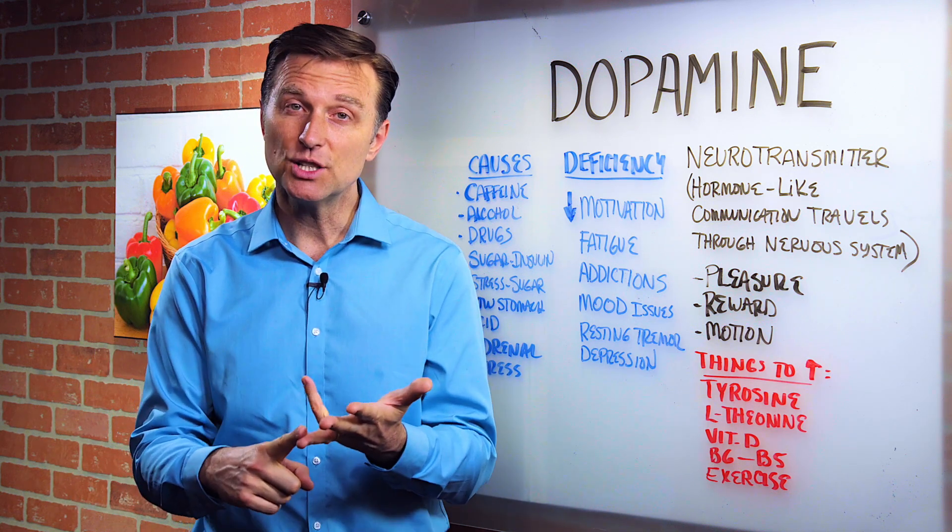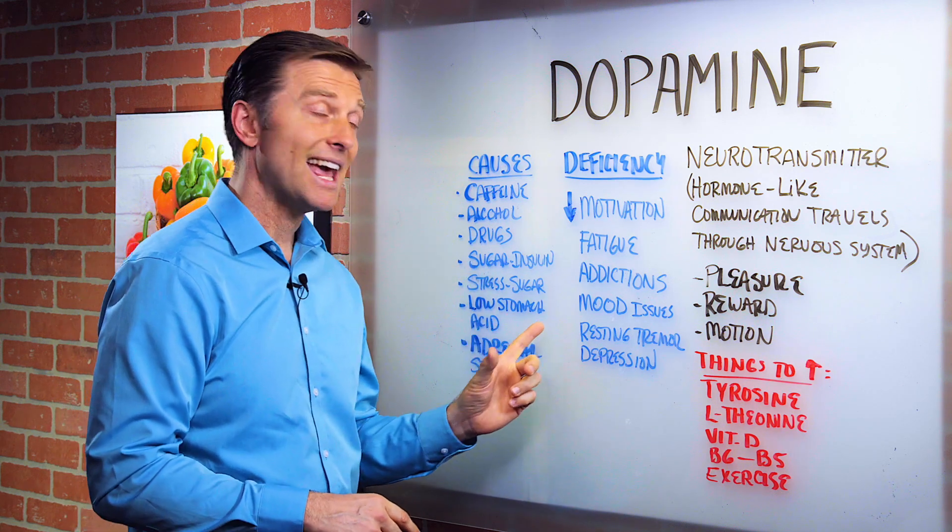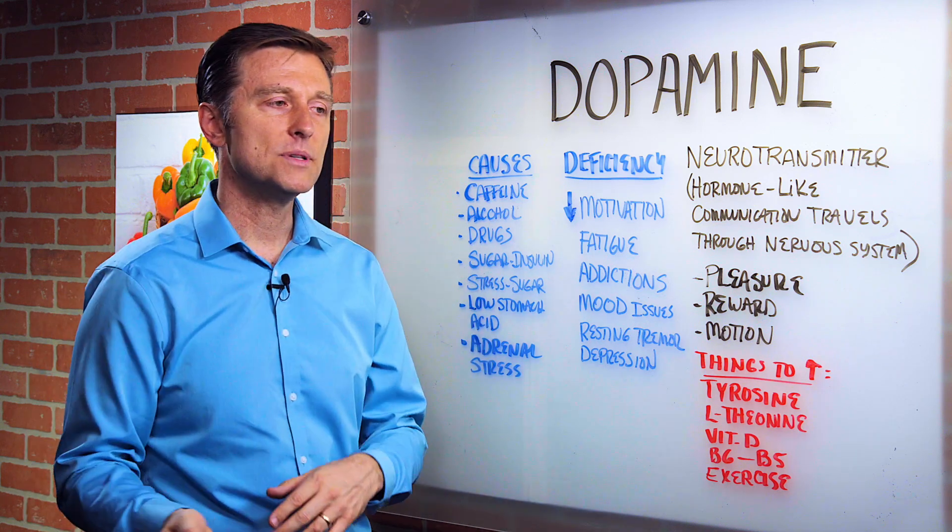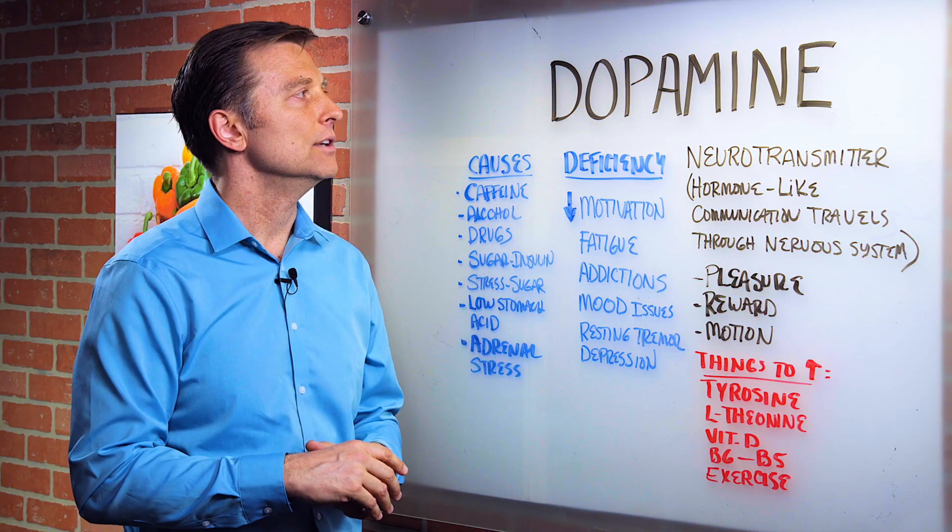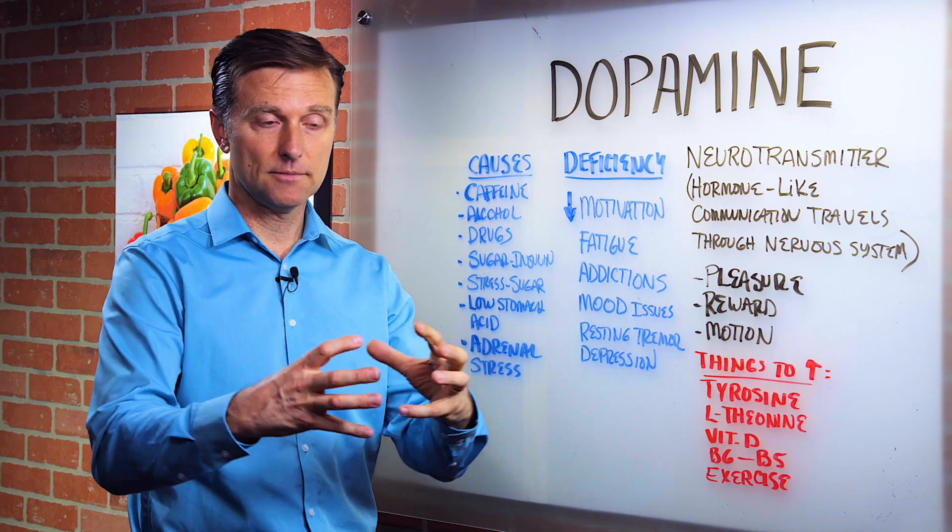Do you have acid reflux? Do you get indigestion? That would mean that you're probably deficient in stomach acid. As you age, you need more stomach acid. So just by adding apple cider vinegar or betaine hydrochloride, you can increase your neurotransmitter reserve.